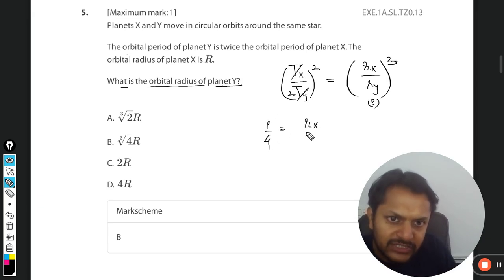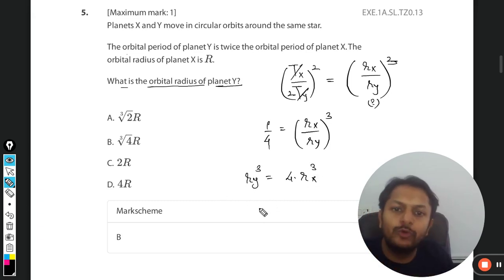So it will become 1/4 equals (r_X/r_Y)³. That will become the cube root there. You want to find r_Y, so we just cross multiply: r_Y³ equals 4 times r_X³. Now we take the cube root on both sides: r_Y equals ∛4 times r_X. Clearly B will be the correct answer.